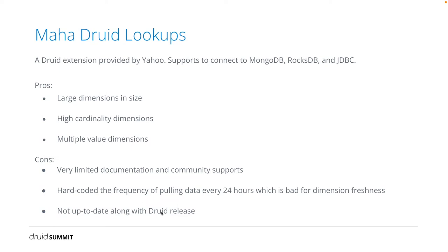Druid lookup is a Druid extension provided by Yahoo. It extends Druid with the ability to connect to MongoDB, RocksDB, and other JDBC databases. This extension attracted our attention because it supports much larger dimensions than native Druid lookups, and also supports high-cardinality dimensions, which is important for our use cases. Mahajood lookups supports multiple value dimensions, meaning we can have multiple columns in the value. However, Mahajood lookups have very limited documentation and community support, which made further development and debugging difficult. Also, the configuration is not very flexible — the extension pulls the RocksDB snapshot from HDFS daily, meaning the freshness of dimension data is one day, and in the worst case, data will not be updated for 24 hours. In our use cases, we cannot tolerate such a long delay in dimension freshness.